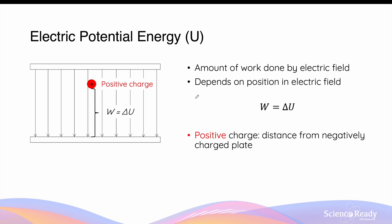Electric potential energy is the form of energy possessed by a charge when it is placed inside an electric field. Specifically, it is defined as the amount of work that can potentially be done by the electric field on the charge. The amount of electric potential energy ultimately depends on the position of the charge within the electric field. For a positive charge, the force vector acting on it is directed towards the negatively charged plate, in the same direction as the electric field lines, causing the charge to move and its potential energy to change. The change in electric potential energy equals the work done on the positive charge by the electric field.